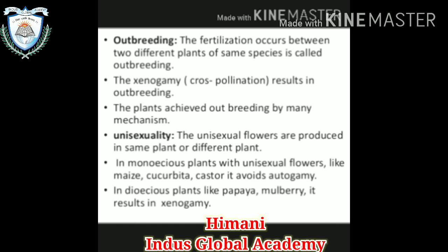Now, outbreeding — the fertilization that occurs between two different plants of the same species is called outbreeding. Xenogamy, which is a type of cross-pollination, results in outbreeding. Plants achieve outbreeding by many mechanisms. First is unisexuality — unisexual flowers are produced in the same plant or in different plants. In monoecious plants with unisexual flowers, like maize, cucurbita, and castor, it avoids autogamy. In dioecious plants, like papaya and mulberry, it results in xenogamy, which is cross-pollination or cross-fertilization.